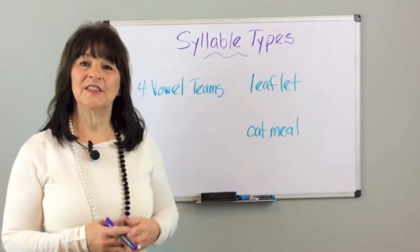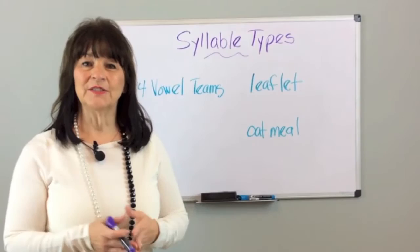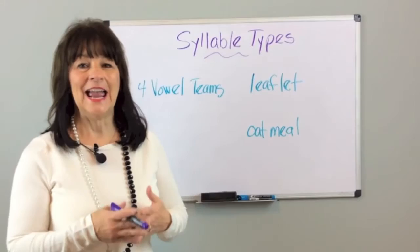Now for the fourth syllable type: vowel teams, or VT. These are the double vowels that make long vowel sounds, like EA, EE, OA, OE, AI, AY, and then UE and EI for more advanced students.